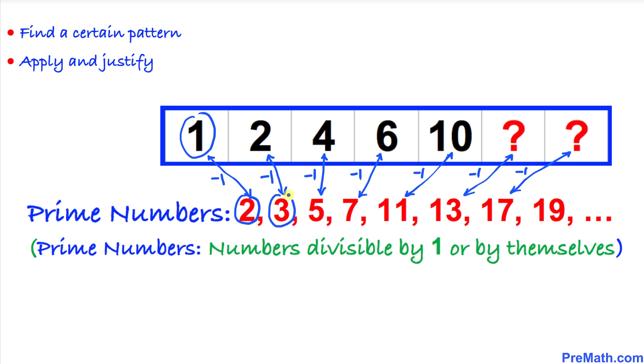Likewise if prime number is 3 minus 1 is going to give us 2, 5 minus 1 is 4, 7 minus 1 is 6, 11 minus 1 is 10, then this 13 minus 1 this missing number is going to be 12 and finally 17 minus 1 is going to be 16. So our answers are 12 and 16.